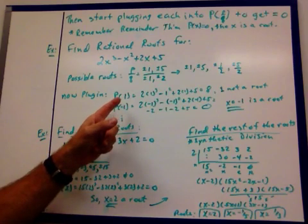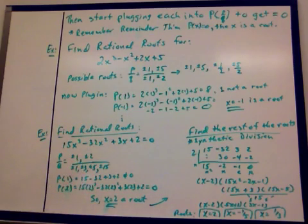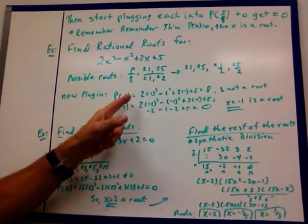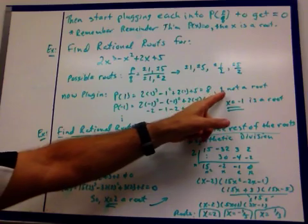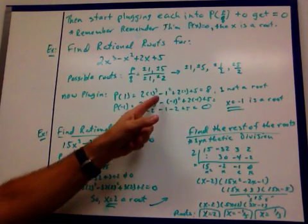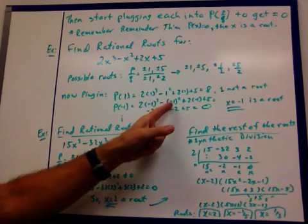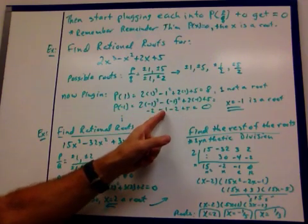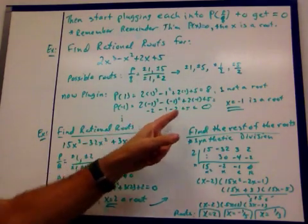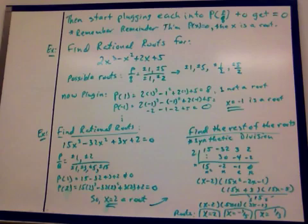So then what you do is you start plugging in, and I always start with 1 if it's usually going to be one of the roots, plus or minus 1. So I plug in 1 for x into my equation here, and I got 8. So 1 is not a root. So I plugged in negative 1. Negative 1 cubed times 2 is negative 2, negative 1 squared is positive 1, so I get minus 1, and then minus 2 from here, and then plus 5. Yeah, you add that up, you get 0. So x = -1 is a root.